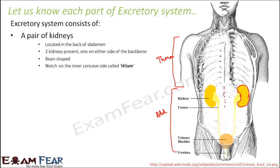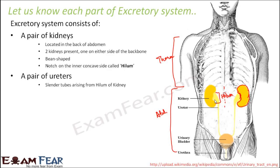The notch on the inner concave side of the kidney is called the hilum. This is where the ureters connect to the kidney. This portion — present on the inner concave side of both kidneys — is called the hilum. Next is the pair of ureters: these are slender tubes arising from the hilum of the kidneys. They open into the urinary bladder. Urine is formed in the kidney, passes into the ureters, and the ureters carry it to the urinary bladder.